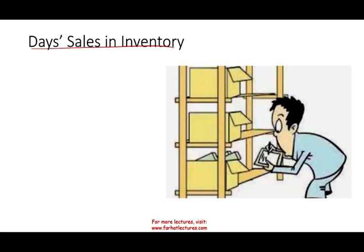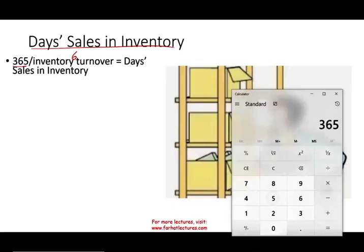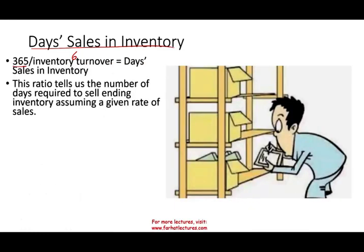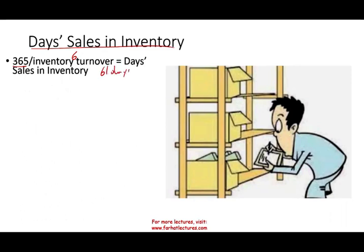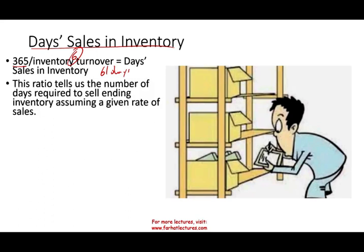Another related ratio is days sales in inventory, very similar to days sales in receivable. Take 365 divided by the inventory turnover — in our case 6 — which gives us 61 days, or almost two months. It tells us how long it takes to sell the average inventory assuming a given rate of sales. Note that for seasonal businesses, the annual average may not be ideal, and you may want to compute it for a shorter period.